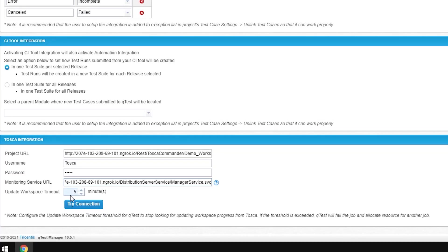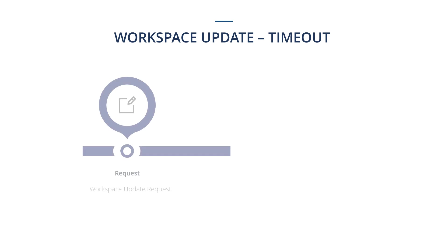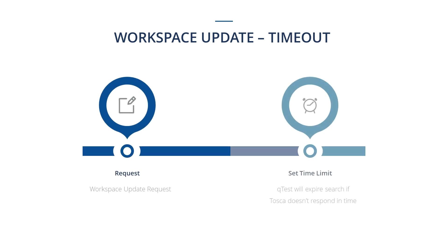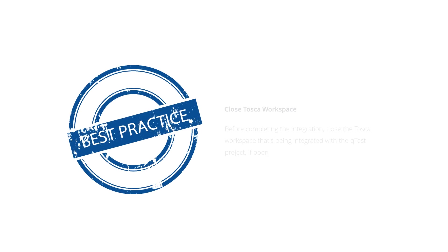Now, in the last field, update the workspace timeout and choose a time limit in minutes. When requesting a workspace update, QTES will expire its search after the set time limit if Tosca does not respond by then. Once it times out, QTES will fail the job and allocate the resource to another job. As a best practice, remember to close the Tosca workspace that's being integrated with the QTES project if open, and ensure this is done before you complete the integration.